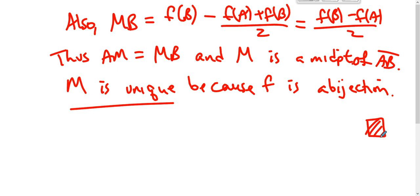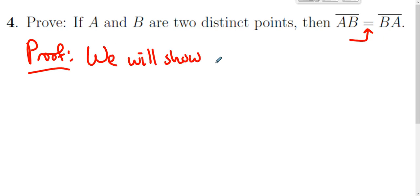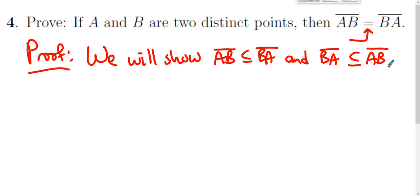Again, using bijections from Math 239 Introduction to Proof and properties of real numbers that we all understand, we can make things happen really quickly. One more thing: let's prove that if A and B are two distinct points, then segment AB equals segment BA. This will not be terribly difficult. The reason I show this proof is to remind us how we prove two sets are equal — by showing each is a subset of the other.